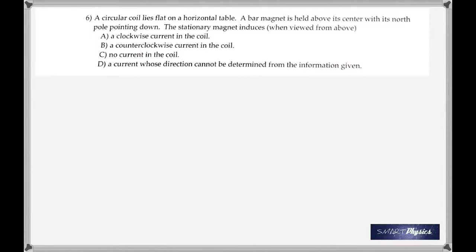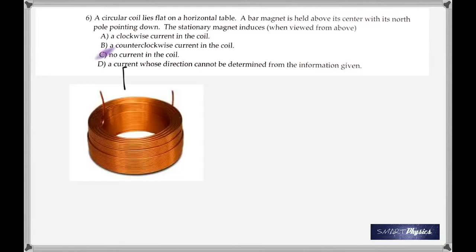A circular coil lies flat on a horizontal table. A bar magnet is held above its center — that's important, the bar magnet is just held there, meaning the magnetic field is not changing. Because the magnet is stationary and not moving, the magnetic field associated with the circular coil is not changing, and therefore the induced current is zero — no current is induced in the coil.